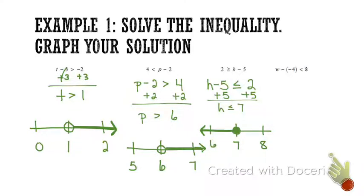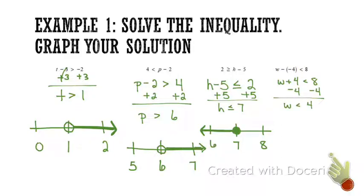Now in the last problem, I see something — it's a double negative. We have to take care of that before we can solve. So that means it's w plus 4 is less than 8. Then you're just going to solve for w — subtract 4 from both sides — and w is less than 4. Now I just graph it: 4 is in the middle. Open dot, with the arrow going left.